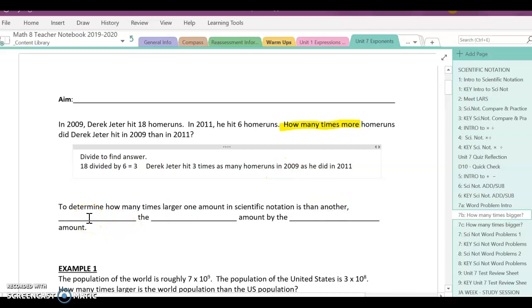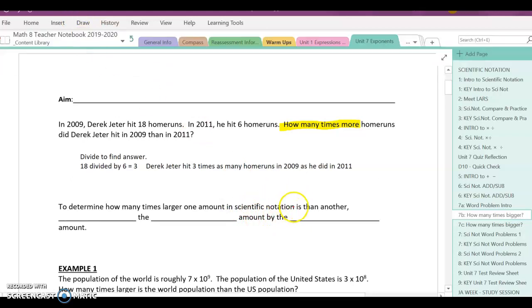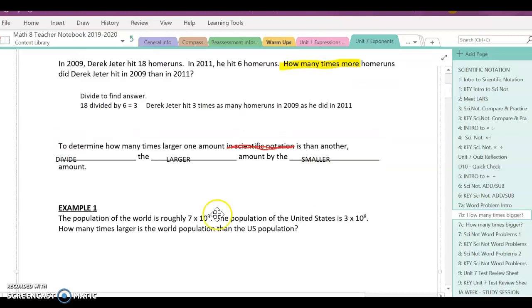Basically to determine how many times larger one amount - and it doesn't even matter if it's in scientific notation or not, I'm actually going to cross that part out. Who cares if it's in scientific notation? It's just to determine how many times larger one amount is than the other. You are going to go ahead and you're going to divide the larger amount by the smaller amount. That's how you figure out how many times more. So don't confuse it with a subtraction problem.